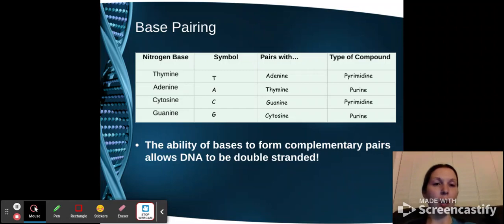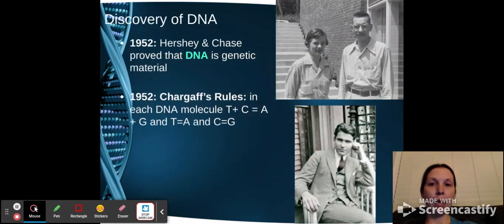And when these partner up, we can classify them as either a purine or a pyrimidine. And the ability of bases to form these complementary pairs is what allows it to be double-stranded. So before we go into more about these pairings, let's talk a little bit about the background of DNA.